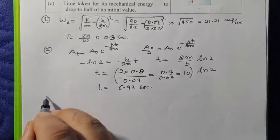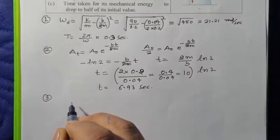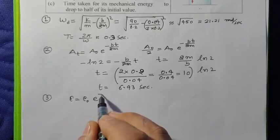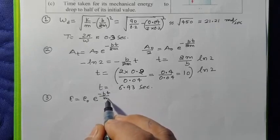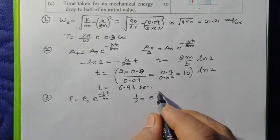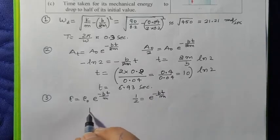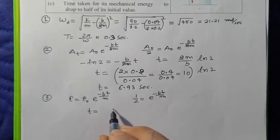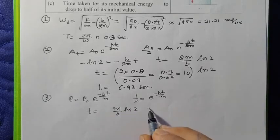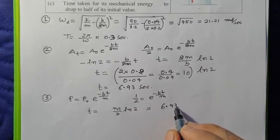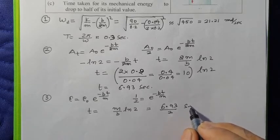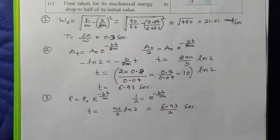If we deal with the third part, it's exactly the same, but telling you how much time for mechanical energy to become half. The power will be bt by m only, and all treatment is the same. We can write it as e to power minus bt by m. From here, the time will be half, so this is 6.93 by 2 seconds.